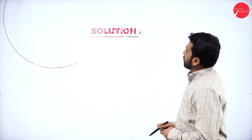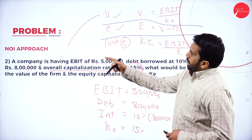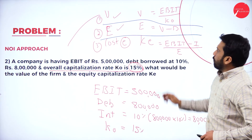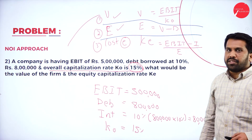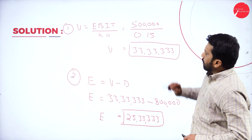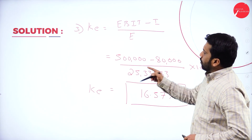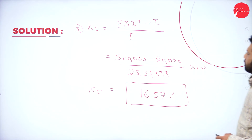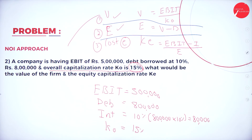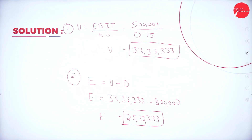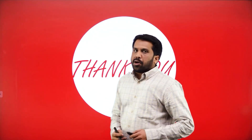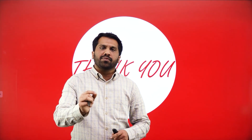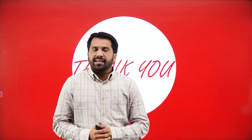So under the NOI approach, we found value, value of equity, and cost of equity. This is all about your NI and NOI approach. Hope you are clear. Only 3 formulas for NI and 3 formulas for NOI. Please work out at home without seeing formulas and without seeing any answer. Thank you.